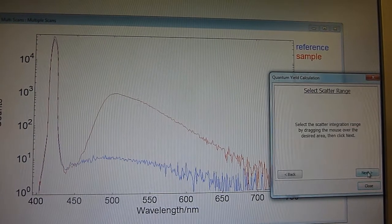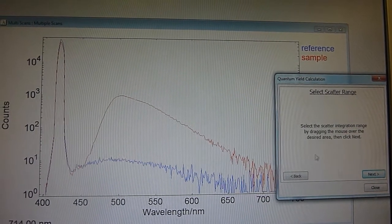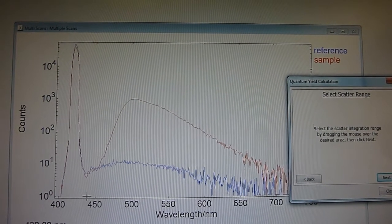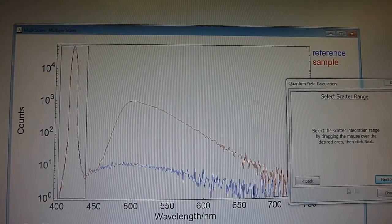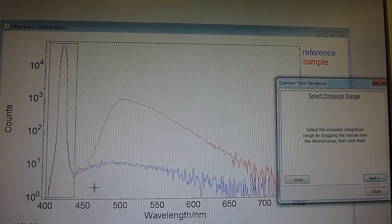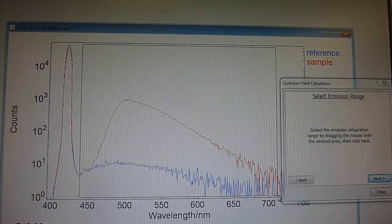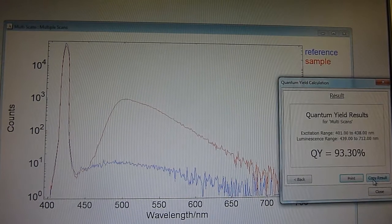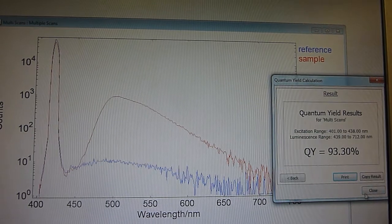So let's now click next. And now it's asking me to select the scatter range. So I'll just kind of click over here. That's about right. I'll click next. Now it's asking me to select the emission range. So I'll select this region here and I'll say next.